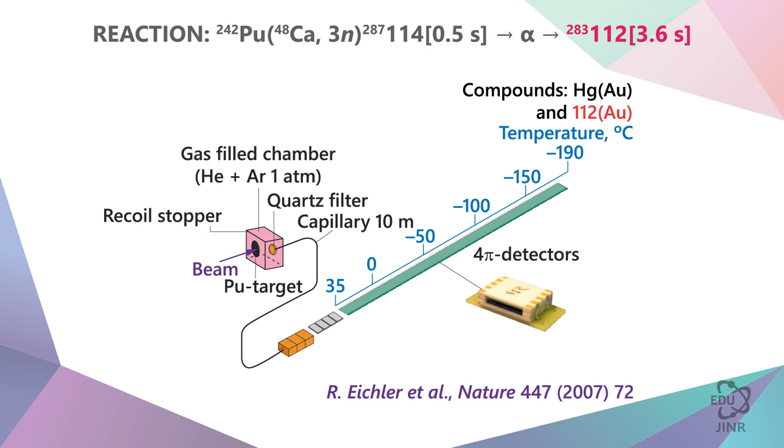The distance between the detectors is 1 mm, and there are 32 of these detectors. Different temperatures are set along the detectors, from room temperature, perhaps slightly higher, to liquid nitrogen temperature, which is minus 190 degrees Celsius.